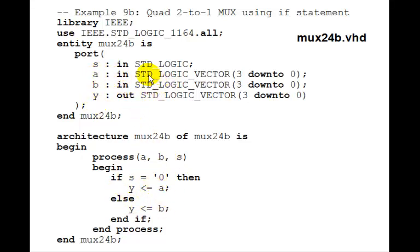Well, if we just change a, b, and y to standard logic 3 down to 0, this becomes a quad 2 to 1 MUX. And we can just keep s as standard logic here. So if s is 0, then y, this 3 down to 0, gets a 3 down to 0. That means y3 gets a3, y2, a2, y1, a1, y0, a0, and so forth. Same for b. So this is the easiest way to make a quad 2 to 1 MUX.